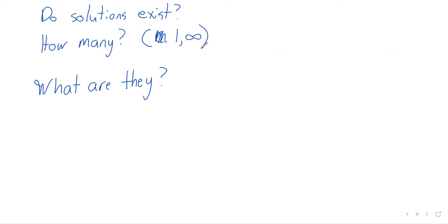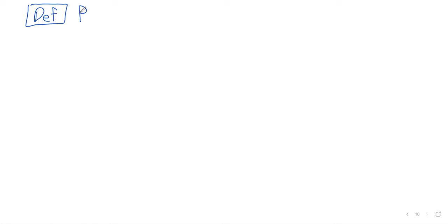We look at what we get and ask: did we get anything? And if we did, did we get one solution or infinitely many? We'll approach this question in a slightly theoretical way — we'll present some definitions and then some theorems. Definition: pivot positions.